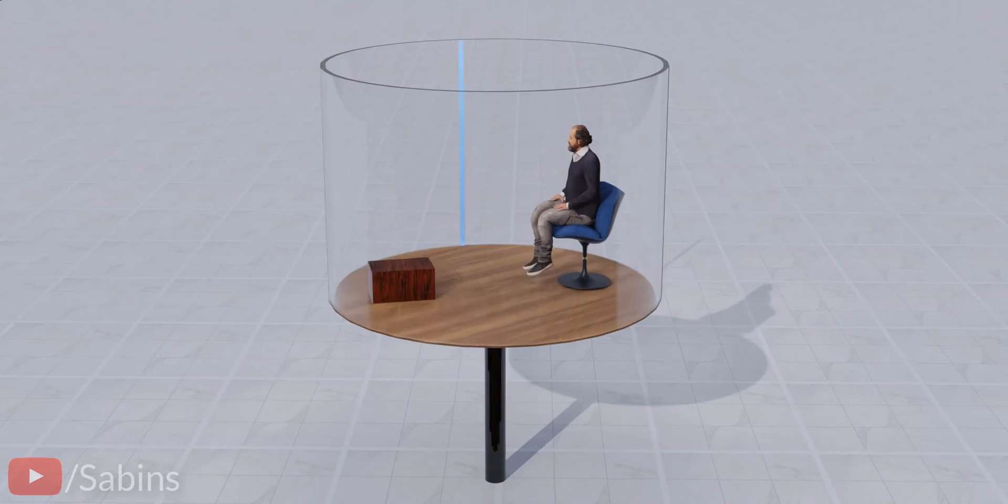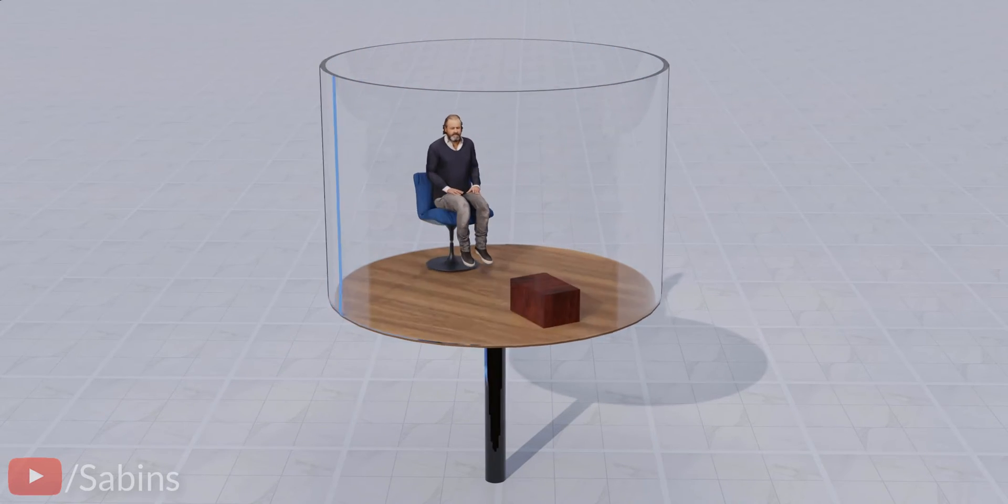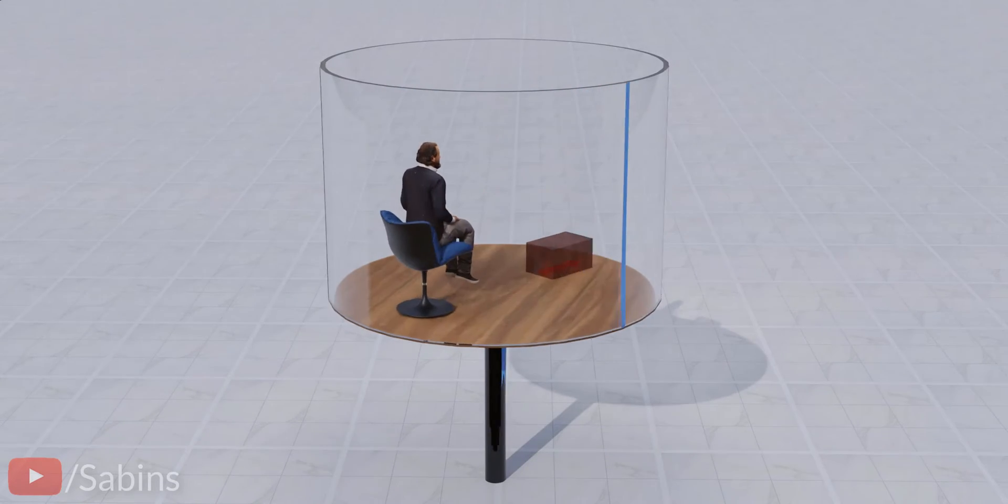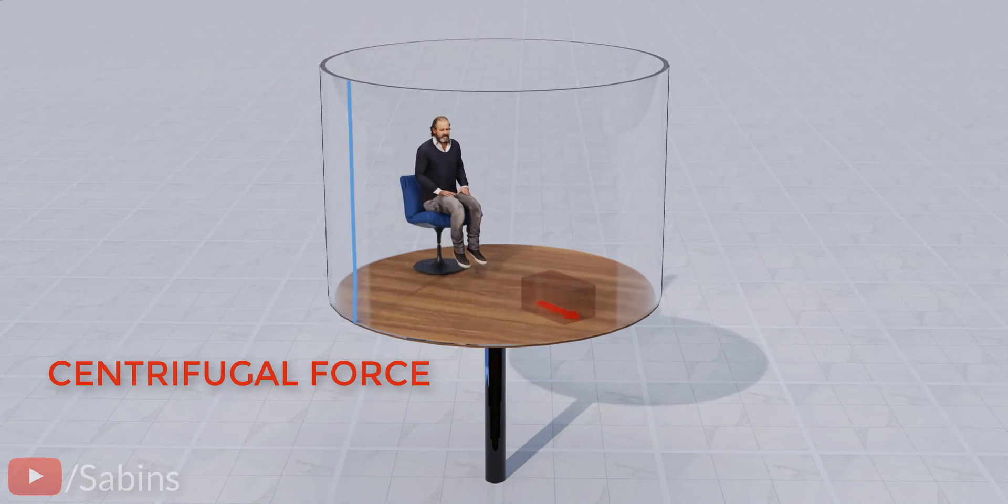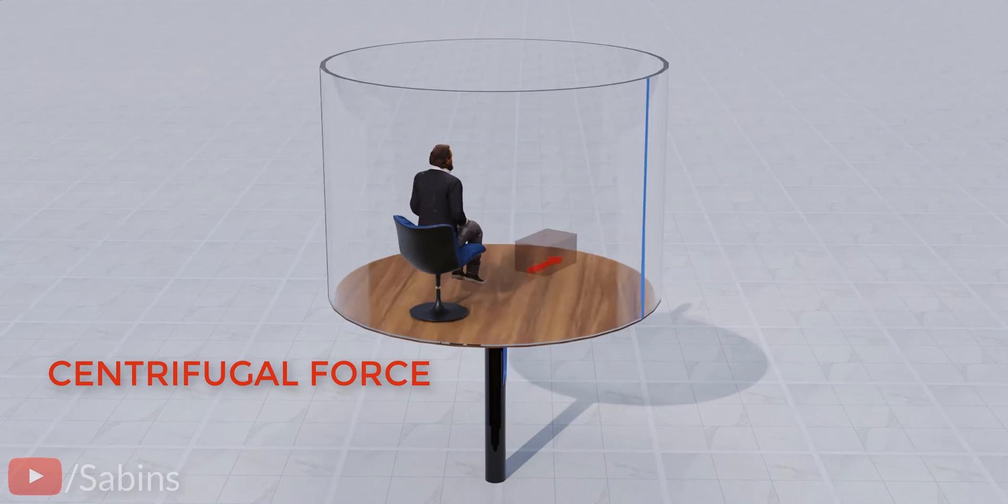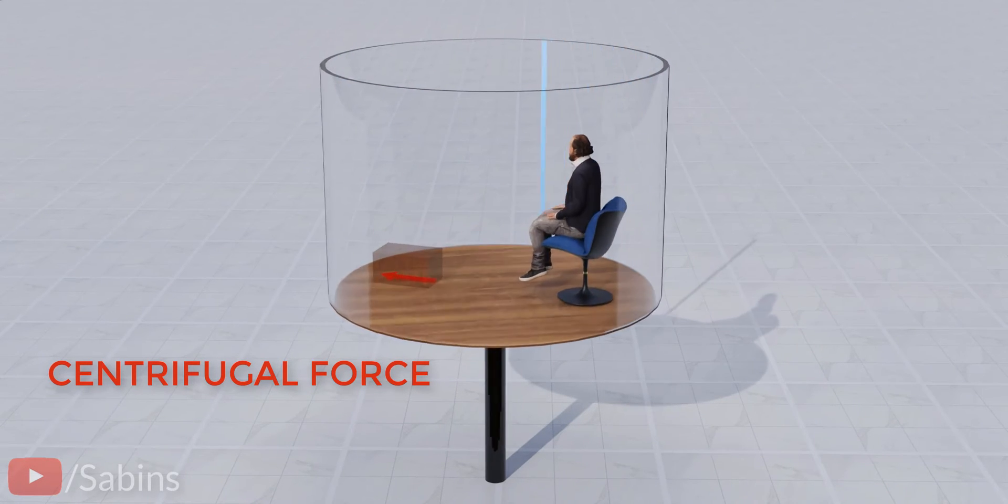In this example, since the observer is sitting inside a rotating cabin, the observer has to add a centrifugal force to analyze the problem. It's a pseudo-force added to convert a non-inertial frame of reference to an inertial frame of reference.